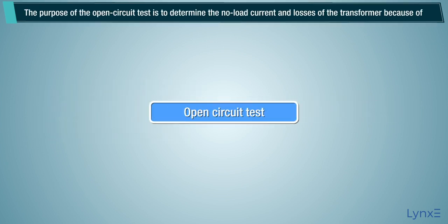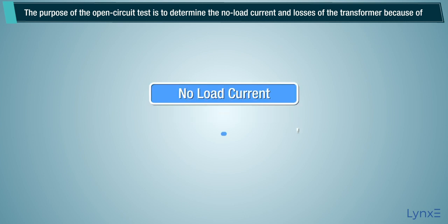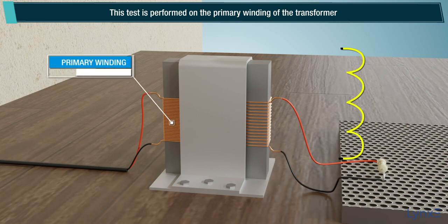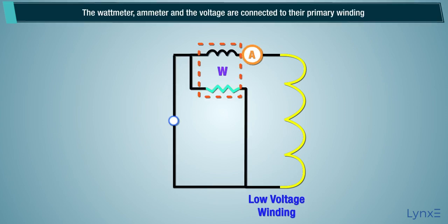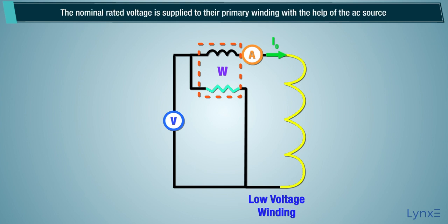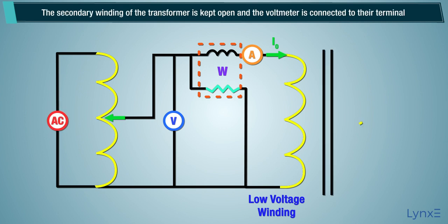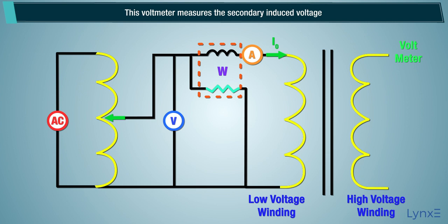The purpose of the open circuit test is to determine the no-load current and losses of the transformer, because of which their no-load parameters are determined. This test is performed on the primary winding of the transformer. The wattmeter, ammeter, and voltmeter are connected to the primary winding. The nominal rated voltage is supplied to the primary winding with the help of the AC source. The secondary winding of the transformer is kept open, and the voltmeter is connected to their terminal. This voltmeter measures the secondary induced voltage.